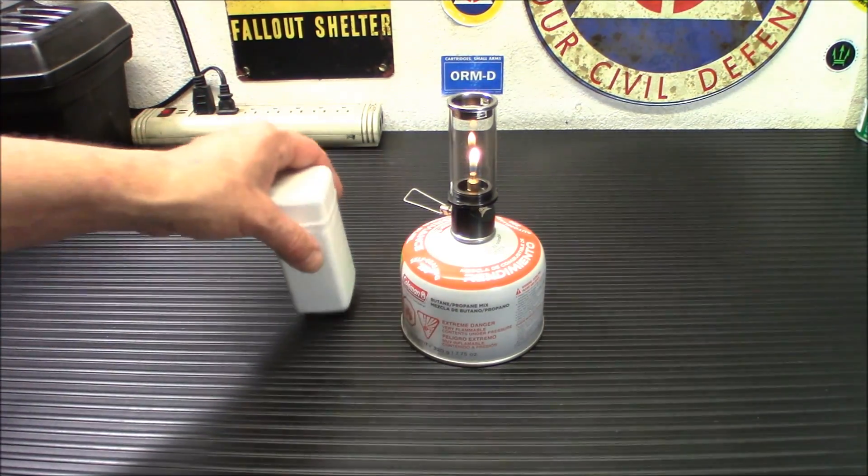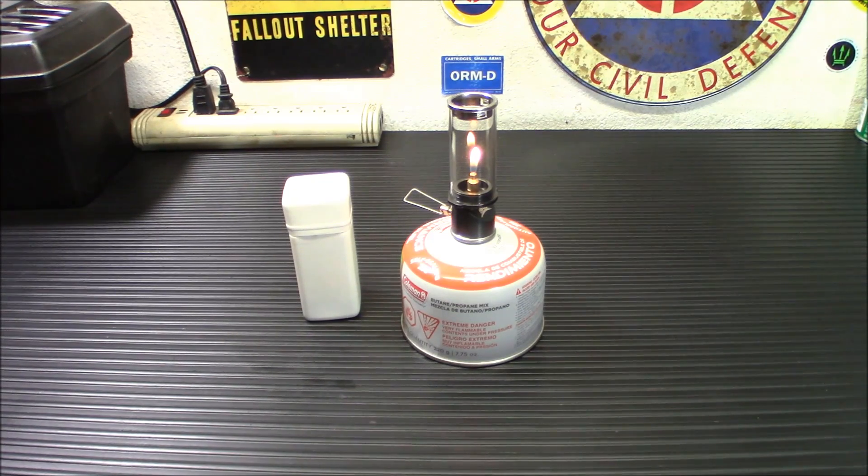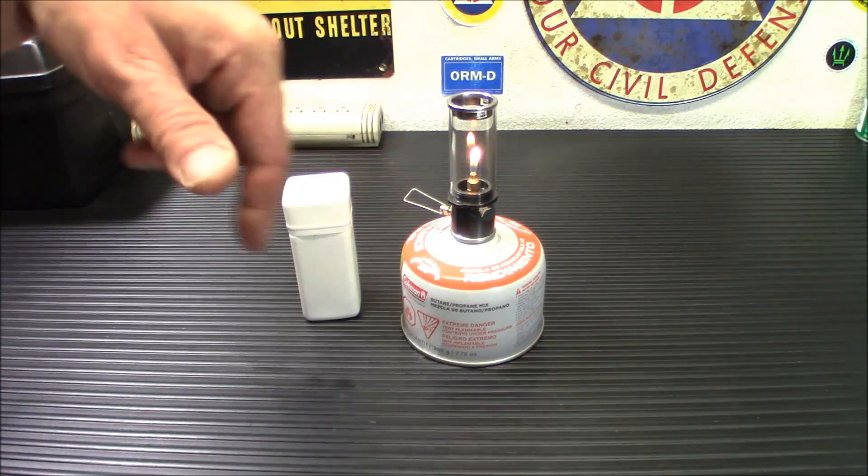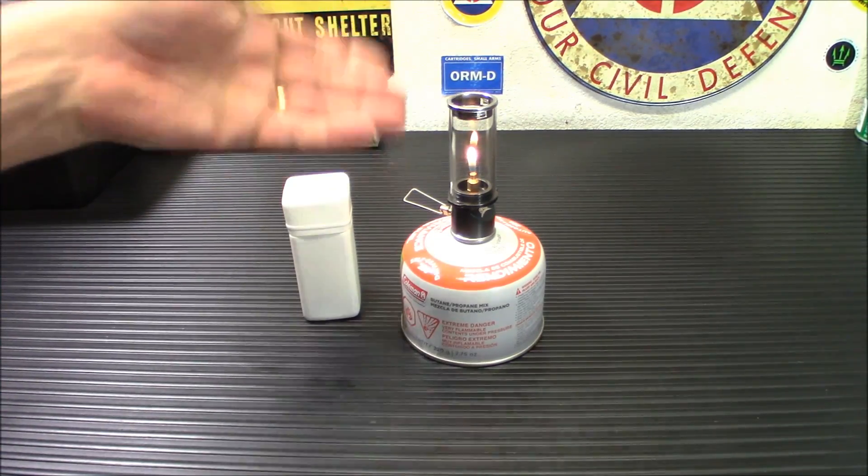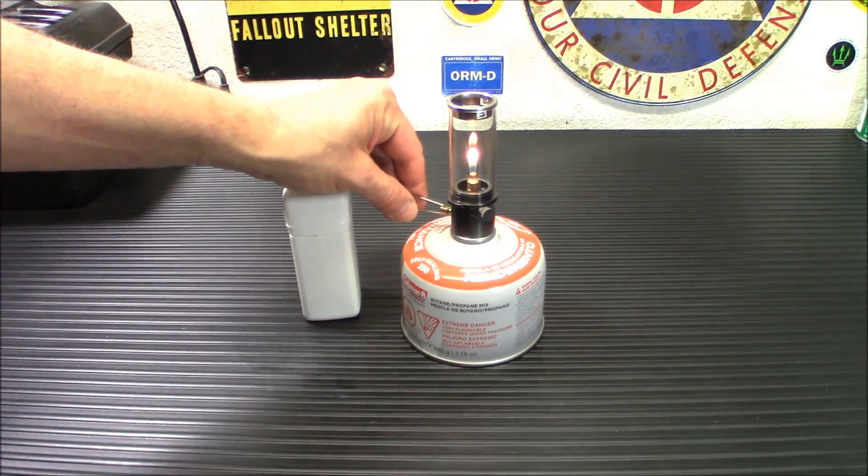It does not rattle around at all. My other one that is the actual lantern with the mantle does rattle around some. This does not at all. I've actually put a paper towel around it so it doesn't rattle around. But this doesn't rattle around at all. This is really safe and secure in there.